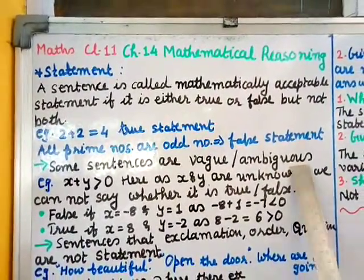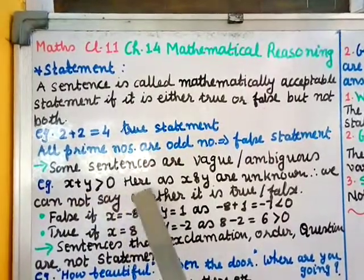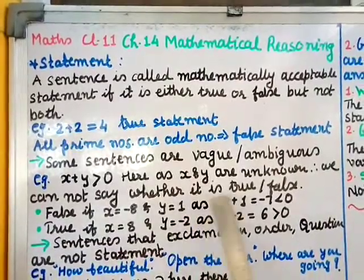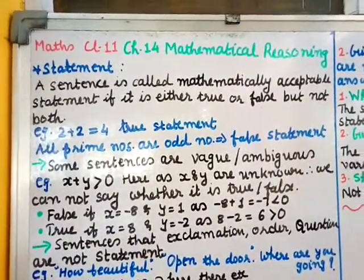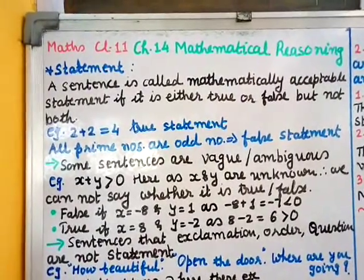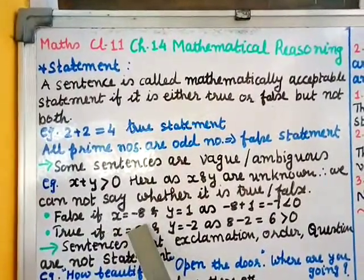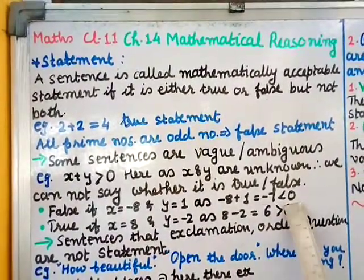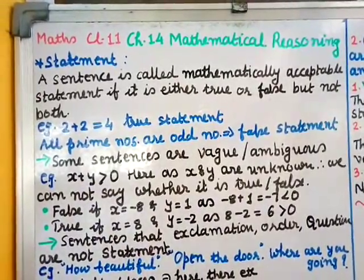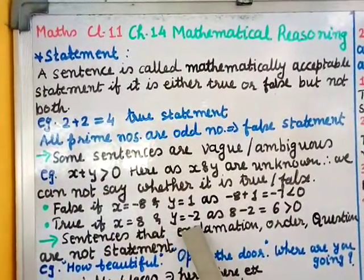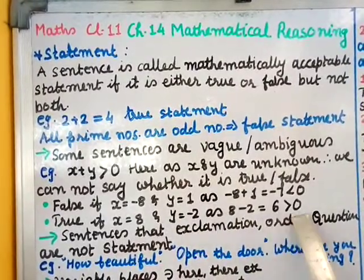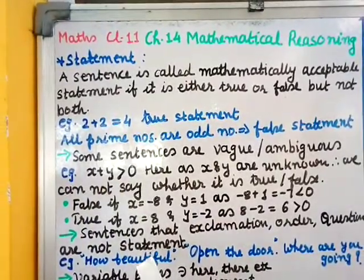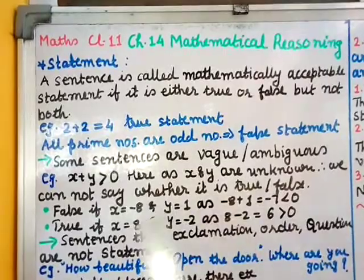Some sentences are vague or ambiguous — for example, 'x plus y greater than 0'. Here x and y are unknown, so we cannot say whether it is true or false. If x equals minus 8 and y equals 1, then minus 8 plus 1 is minus 7, which is less than 0 — so the sentence becomes false. If x equals 8 and y equals minus 2, then 8 minus 2 equals 6, which is greater than 0 — so it becomes true. Since it depends on the values of x and y, it is vague or ambiguous and therefore not a statement.